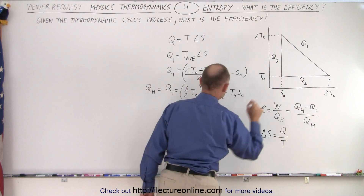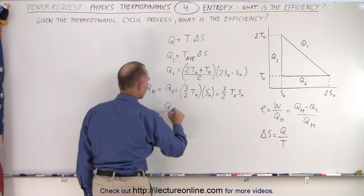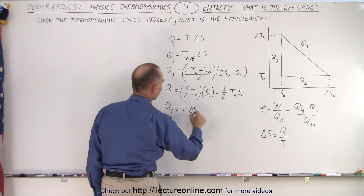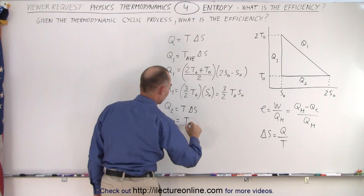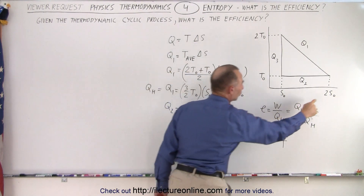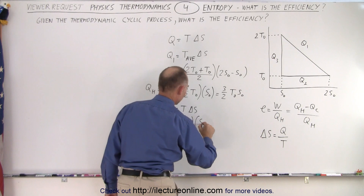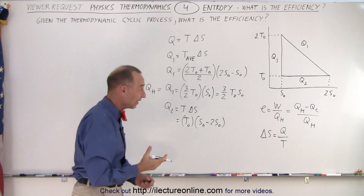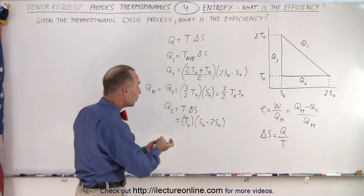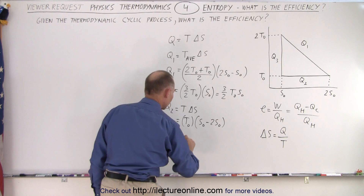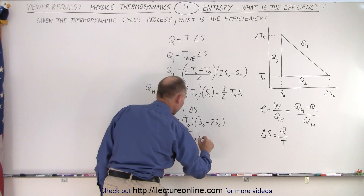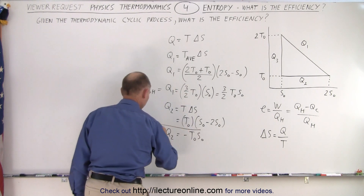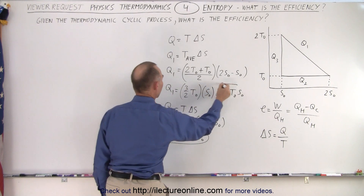Now let's look for Q2. Q2 is equal to the temperature times the change in entropy. In this case, that is T sub-naught. The change in entropy goes from 2S sub-naught to S sub-naught, so that's S sub-naught minus 2S sub-naught. That's a negative quantity, meaning heat is removed from the system. Q2 equals minus T sub-naught S sub-naught. That would be Q cold.